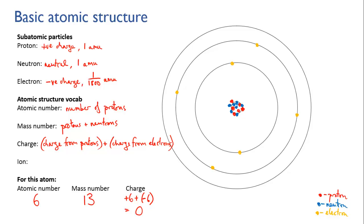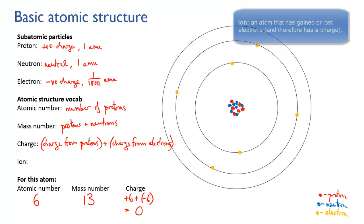If an atom does have a charge, whether it's positive or negative, we call it an ion. This means an atom with a charge. So only use the term atom if you're referring to a neutral atom, and use ion instead if the atom has a charge.